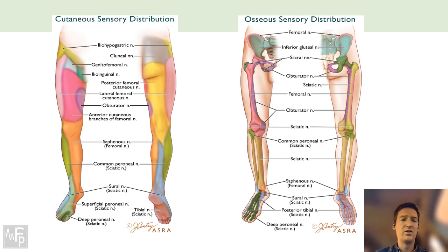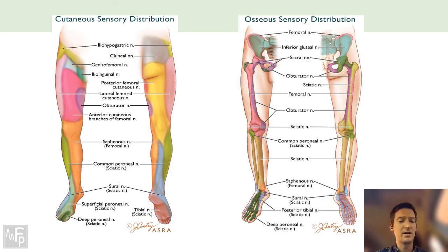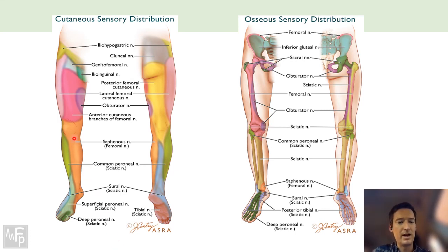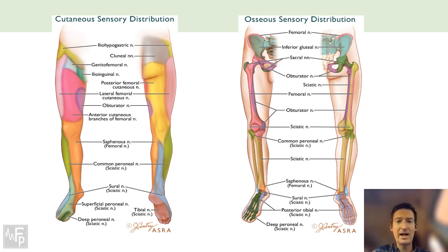The cutaneous supply below the knee is absolute exam fodder - they love asking about the five nerves. Sural nerve: lateral part of the foot. Tibial nerve: the bottom of the foot. Branches of the common peroneal: superficial peroneal at the top of the foot, and the web spacing next to the big toe (hallux) from the deep peroneal. All of those are sciatic. Then the femoral contribution: the saphenous nerve supplies the medial side of the leg. Importantly, there's a small patch at the medial malleolus - if you don't block the saphenous nerve after ankle ORIF, they'll be really sore at exactly that point.